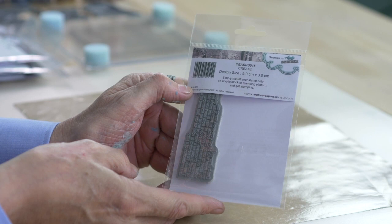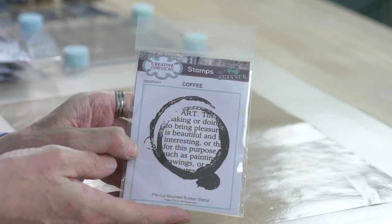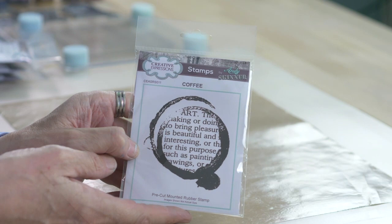We've got one here called Create, it's dictionary text explaining the word create. We've got another mixed media stamp with a coffee ring and dictionary text in the middle which explains art. I love this one, skeleton of a horse. And finally, the earth without art is just a.